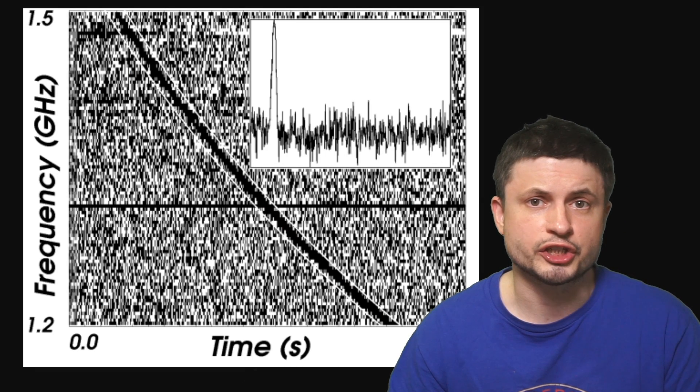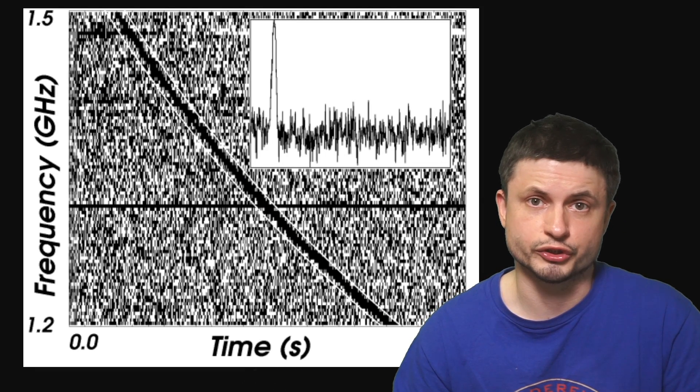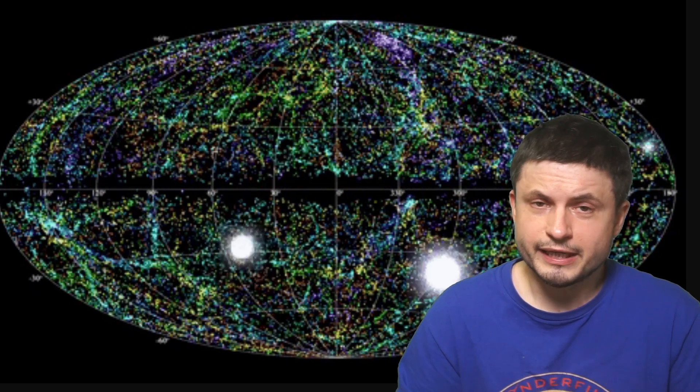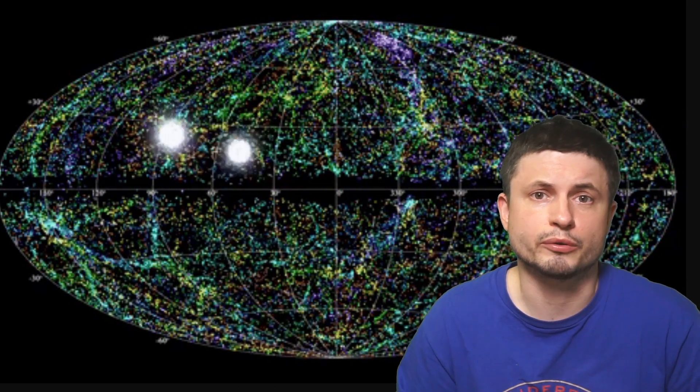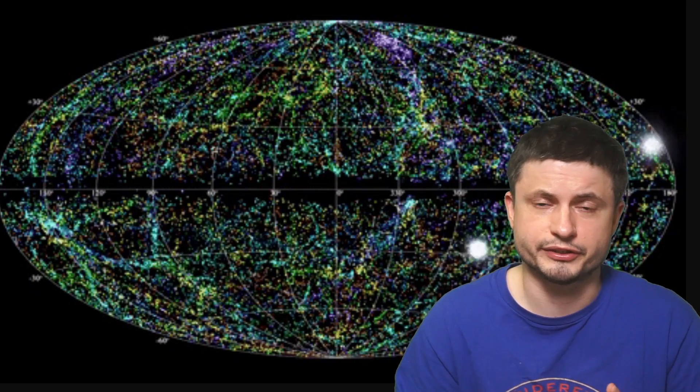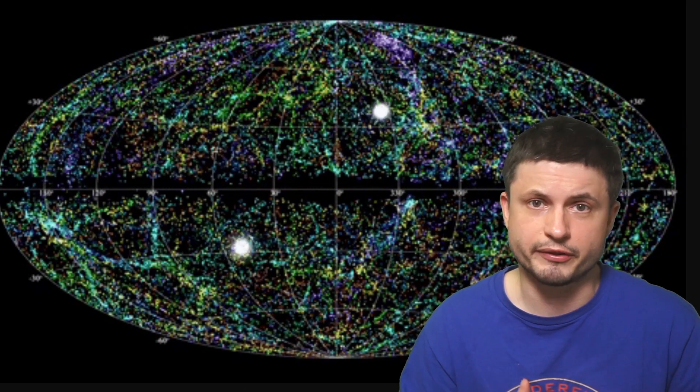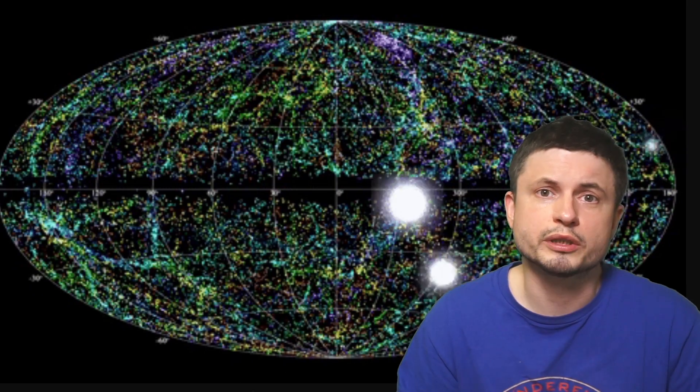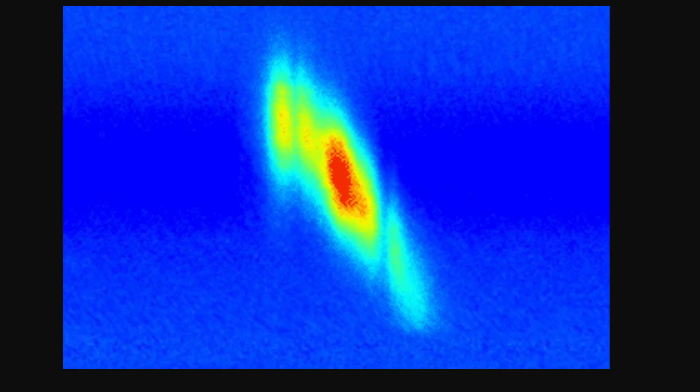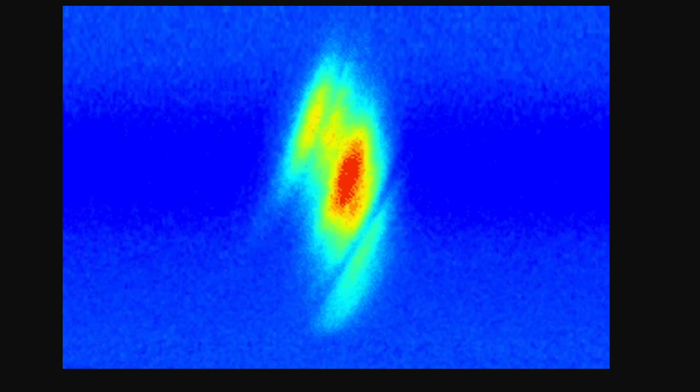But even since the original detection in 2007 of what's known as Lorimer burst that you see right here, the scientists haven't actually learned that much in regards to their origin and what exactly creates them. There are some speculations and some detailed theories but at the moment there is no conclusive explanation for what's actually happening here. But some of the last few studies in the last year or so have managed to come extremely close to identifying some really important properties which in theory can actually help us pinpoint where exactly these signals come from, what's causing them and more importantly how all of this can teach us about what happens in the universe as a whole.